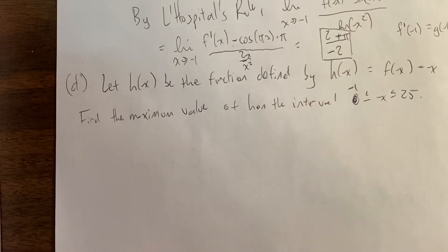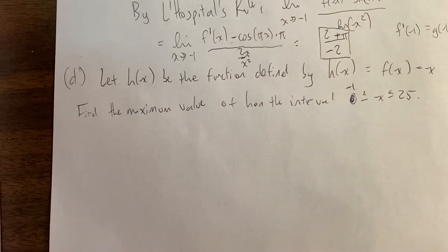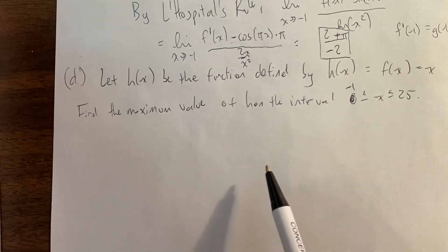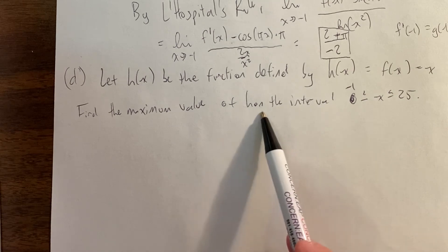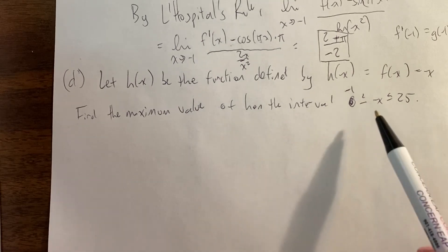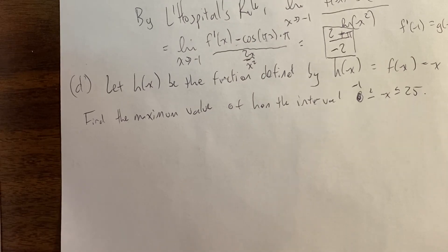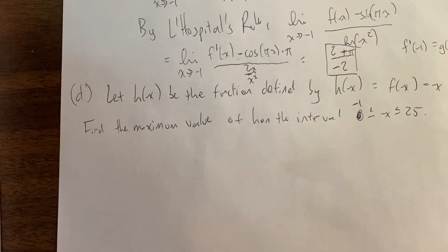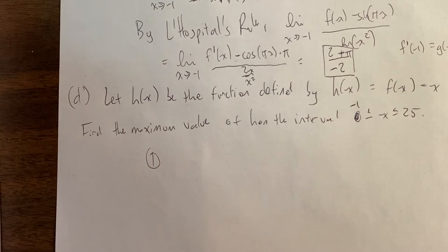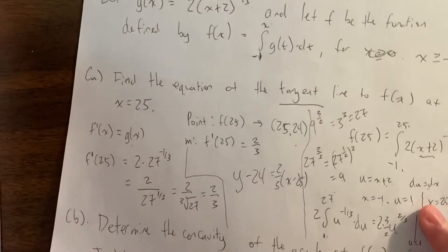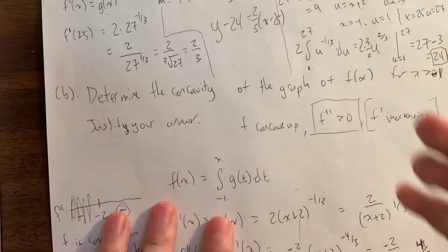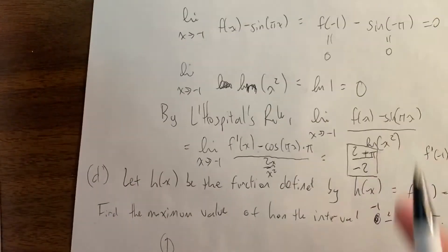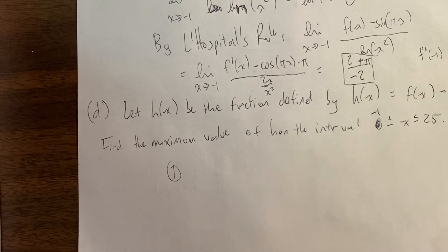Now let's do this final question — a little bit tricky. Let h(x) be the function defined by h(x) = f(x) - x. Find the maximum value of h on the closed interval from -1 to 25. This is the closed interval method. Before we start, remember that if you want to watch our video on the closed interval method, we have videos on that, as well as videos on L'Hôpital's rule, equation of tangent lines, and concavity. Be sure to check out any specific video if you're having trouble.